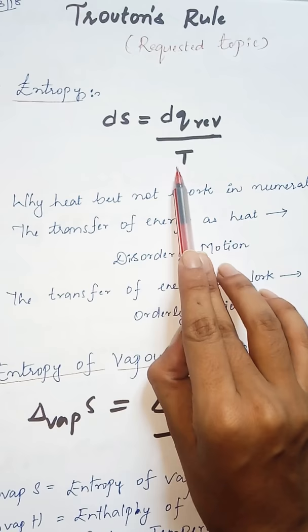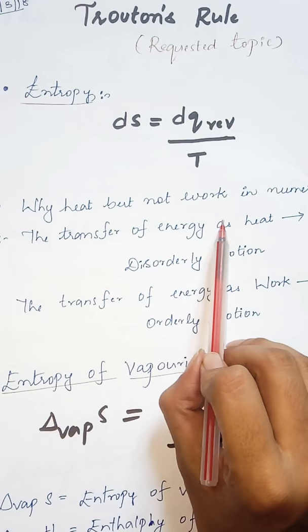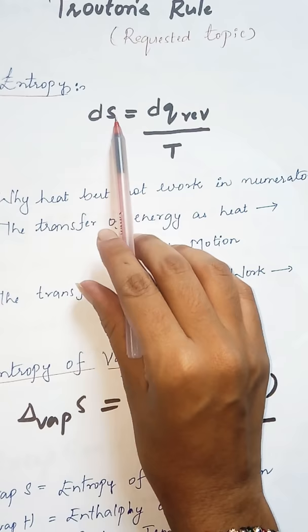One thing we should know is why only heat is considered but not work. The transfer of energy as heat is a disorderly motion which is significant for the entropy.